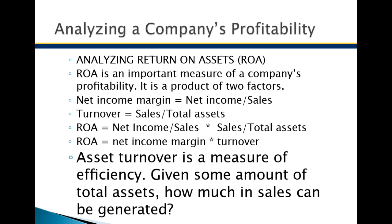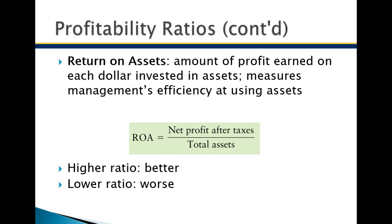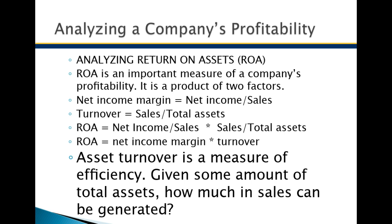If you take net income divided by sales to get your net income margin and multiply it by sales divided by total assets — net income margin times turnover — you get the return on assets ratio. So this is just as important to remember: when calculating return on assets, you can do net profit after tax divided by total assets, or net income margin times turnover. It's important to understand how net income, sales, and total assets relate to each other.